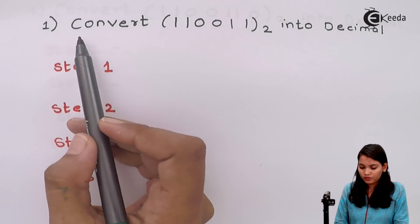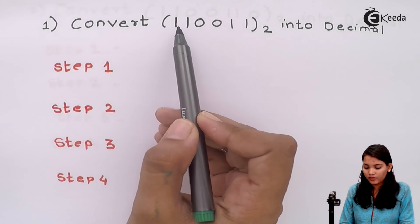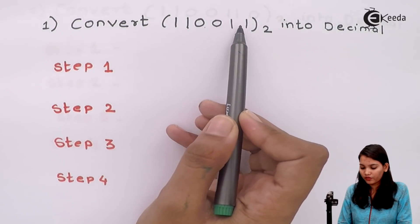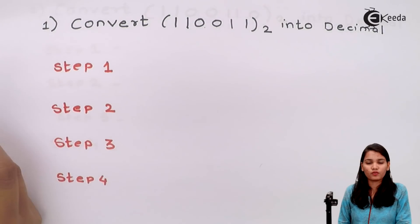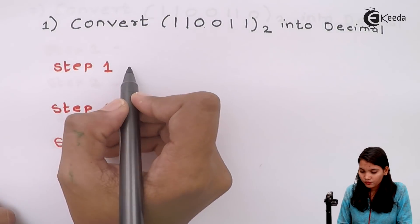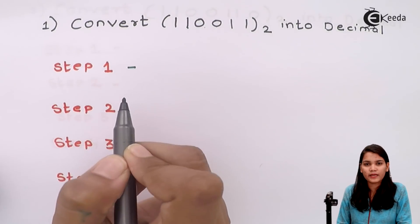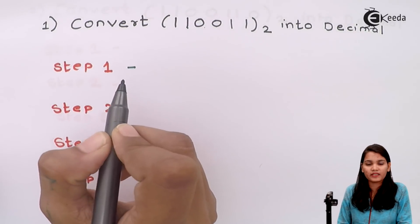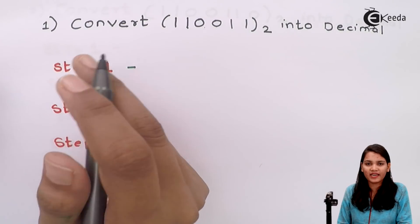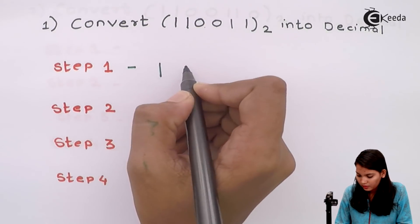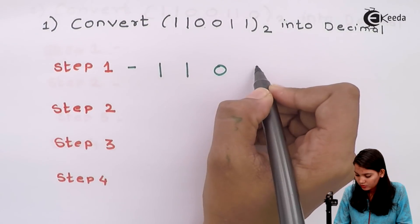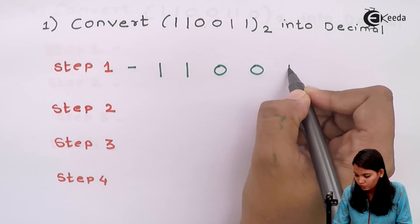The first numerical: convert 1 1 0 0 1 1 into decimal. We will follow the steps as seen in previous videos. The first step is to write the given binary number, that is 1 1 0 0 1 1.